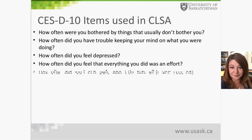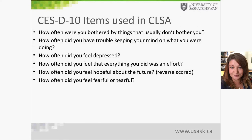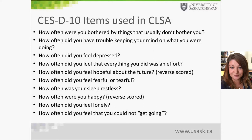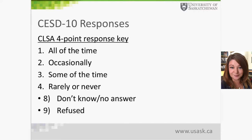The questions also include: how often did you feel depressed, how often did you feel everything you did was an effort, how often did you feel hopeful about the future — which should be reverse scored — how often did you feel fearful or tearful, how often was your sleep restless, how often were you happy — also reverse scored — how often did you feel lonely, and how often did you feel you could not get going. Each item is scored on a four-point response key ranging from all of the time to rarely or never, plus options for don't know and refused.